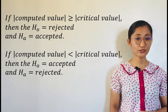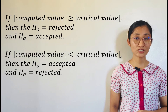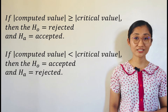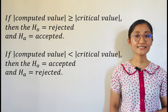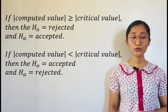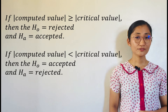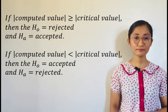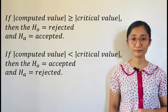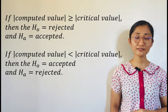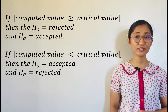Note that if the absolute value of the computed value is greater than the absolute value of the critical value, we reject the null hypothesis and accept the alternative hypothesis. However, if the absolute value of the computed value is less than the absolute value of the critical value, we accept the null hypothesis and we reject the alternative hypothesis. Rejecting a null hypothesis does not indicate that it is incorrect — it is just that the data suggests enough evidence to disagree with it. In the same manner, accepting the null hypothesis does not indicate that it is correct; only there is no enough evidence to prove that it is false.